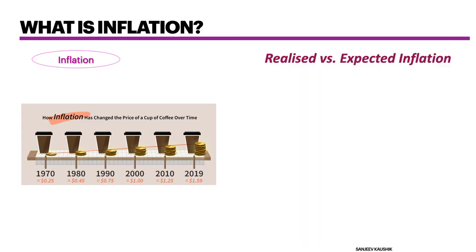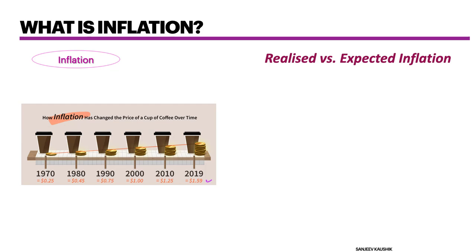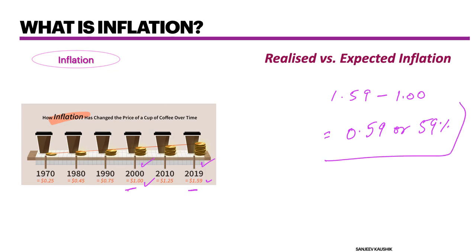On inflation, there are realized inflations — the actual or current inflation already recorded in terms of price increases — and then there's expected inflation. How do you derive realized inflation? Simple: in 2019 the coffee price was $1.59; in 2000 it was $1.00. The increase is $0.59 or 59%, so inflation in coffee increased by 59% over 19 years from 2000 to 2019. That's your realized inflation.